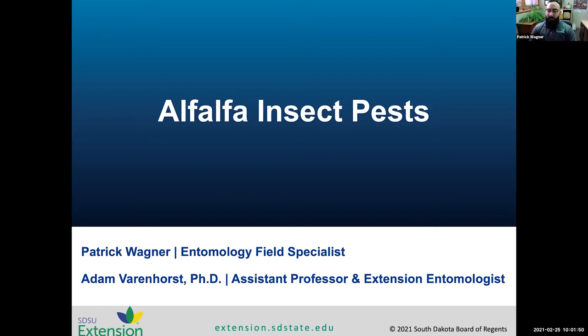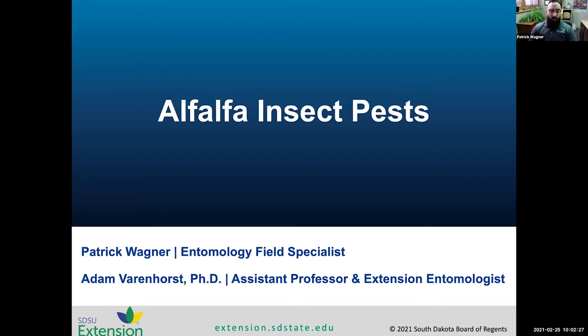I'm going to talk about the insect pests that we can see in alfalfa. Adam and I made a short list — tried to condense it to the common ones you might see. For each insect pest, I'll share information about what they look like, what the damage might be for scouting purposes, and then the management options available for prevention and control if any outbreaks do pop up. The first one is the alfalfa weevil.